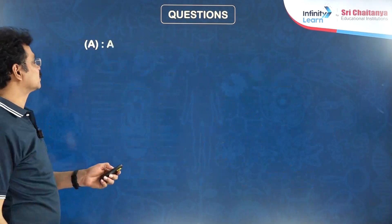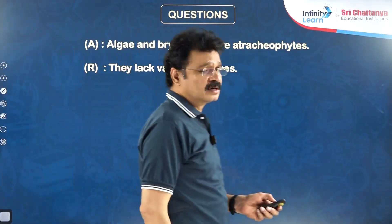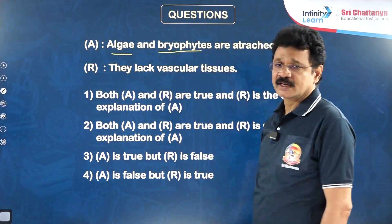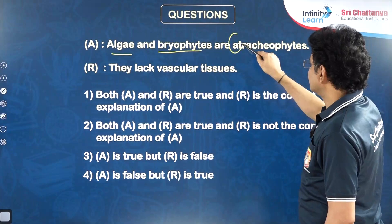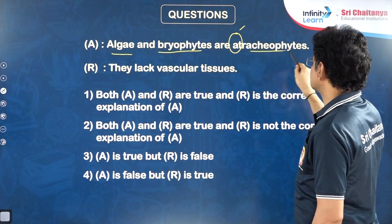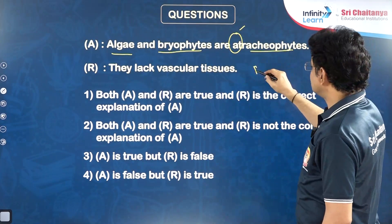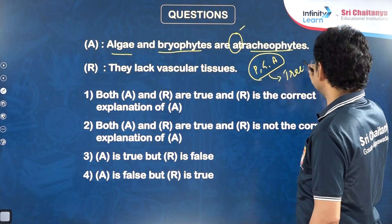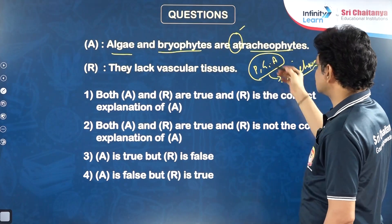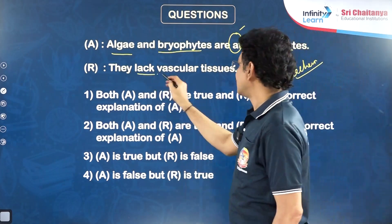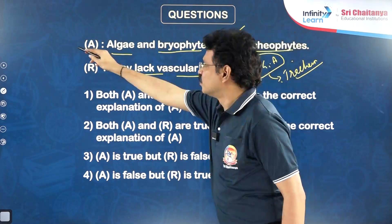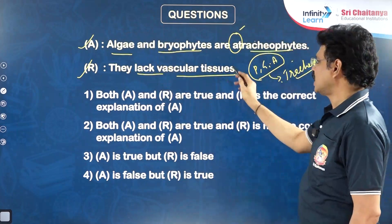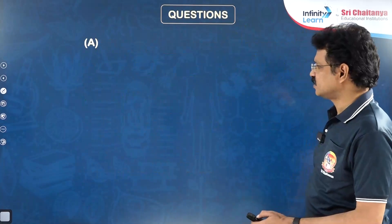Next question: Algae and bryophytes are atracheophytes. Reason: They lack vascular tissues. Both assertion and reason are true and reason is the correct explanation. The remaining three members — pteridophytes, gymnosperms, angiosperms — have vascular tissues and are called tracheophytes. This classification is based on presence or absence of vascular tissues. The right answer is the first option.